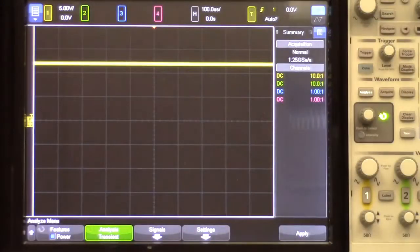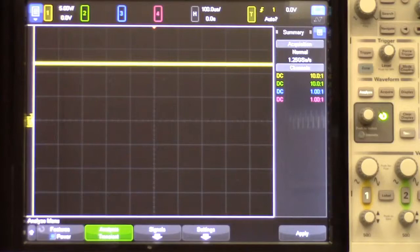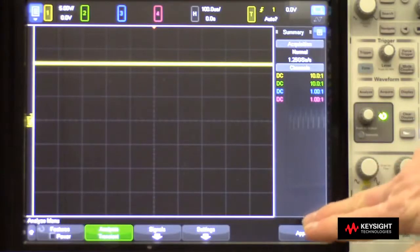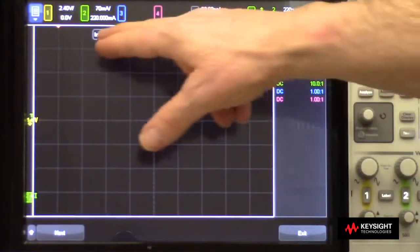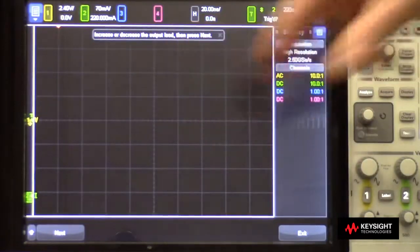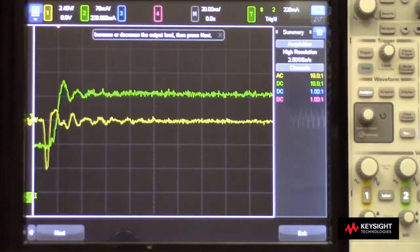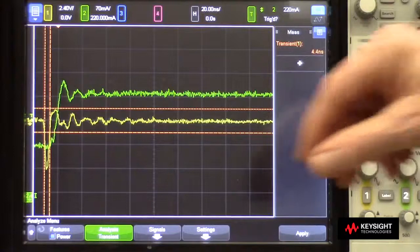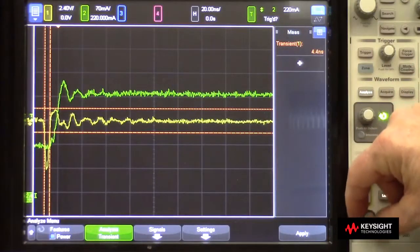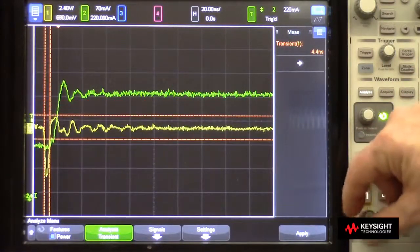Now, at this point, we're ready to perform a transient response measurement. To perform the transient response test, I press apply, I get an instruction on screen: increase or decrease the output load, then press next. So what you can see here, I'm going to reposition my waveforms so that you can see them more clearly.